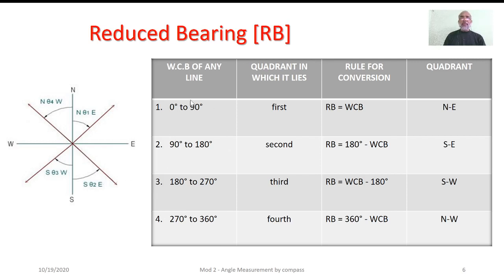If a line has a whole circle bearing of 0 to 90 degrees, it lies in the first quadrant, and the reduced bearing will be the same as the whole circle bearing. Whereas if the whole circle bearing is between 180 and 270 degrees, it lies in the third quadrant and the reduced bearing is expressed as whole circle bearing minus 180 degrees. Ultimately, the value obtained will be the same as its chordal bearing.